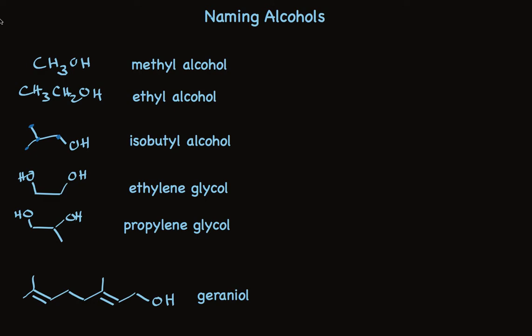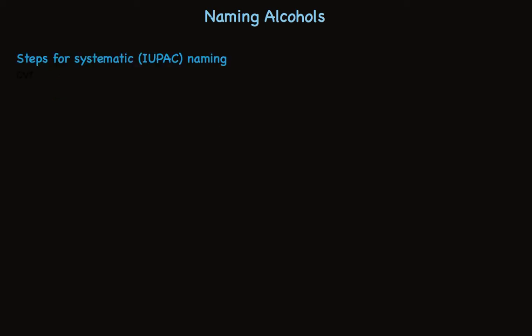That's why the systematic rules were developed — so that you could look at the name for any compound and write its structure solely based on the name. You can see the arrangement of all atoms, the stereochemistry, the whole business. Let's review the rules and then we'll look at a few examples.